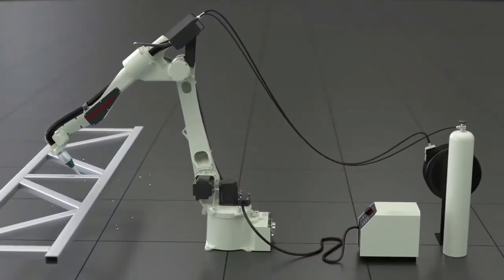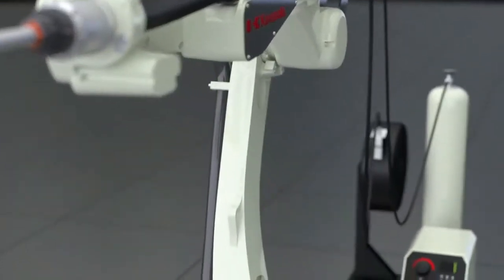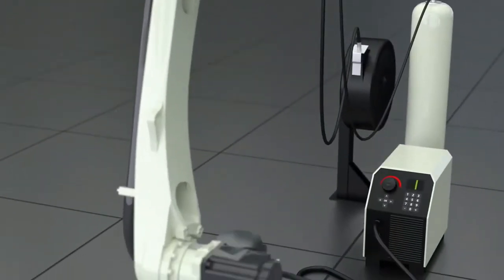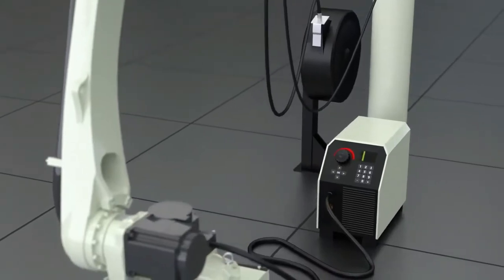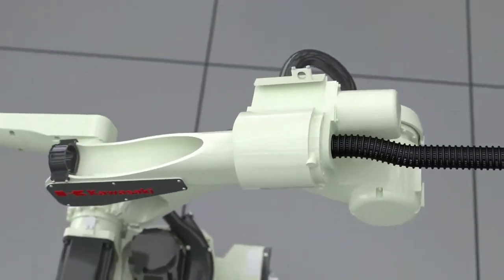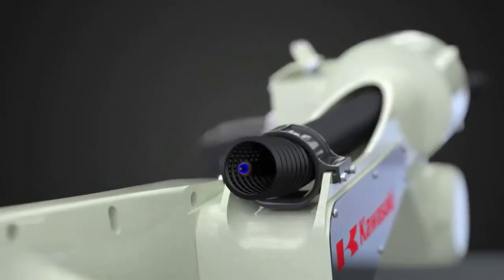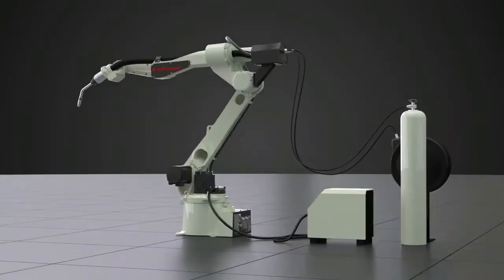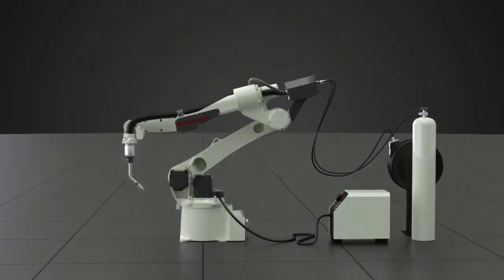The BA-6L has been designed to work smoothly with a number of industry-leading welding equipment. Its hollow wrist design allows for easy management of cables and hoses around the torch, providing stable wire feeding and reliable offline teaching.